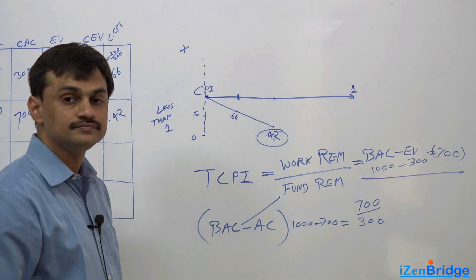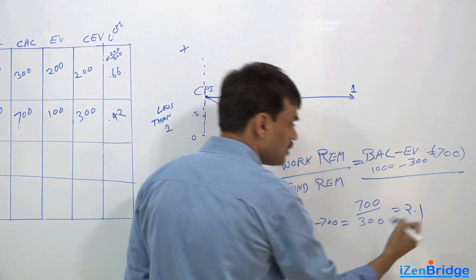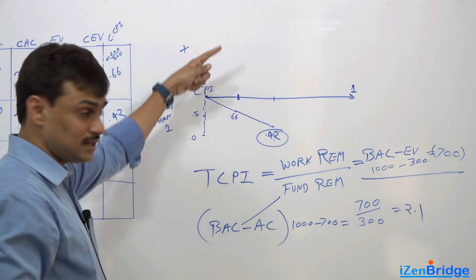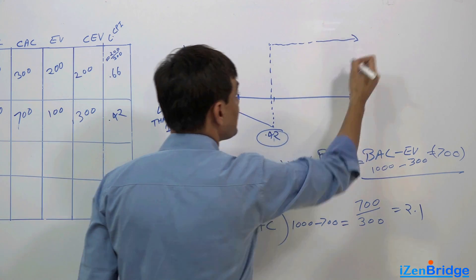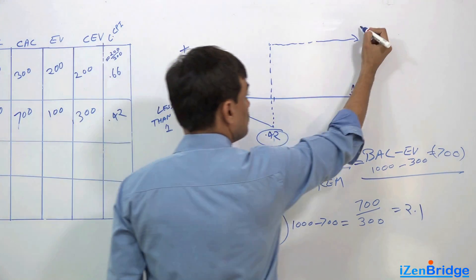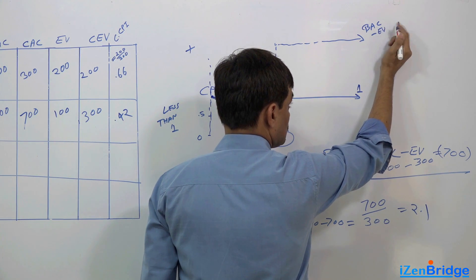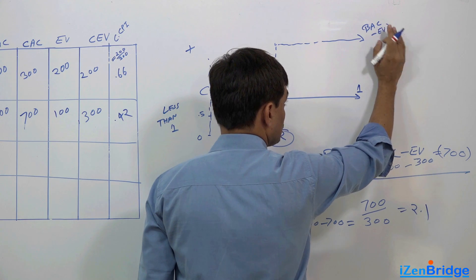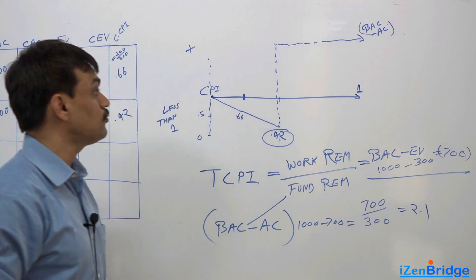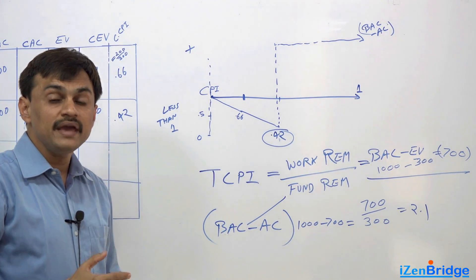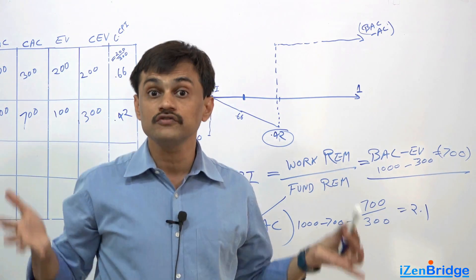And if I go with this calculation, it is $1000 minus $700, and I am reaching to a situation where I have $700 divided by $300 to take care of. So I need to achieve a cost performance index of 2.33. So if I want to get this work done, I need to take my performance somewhere here, and then only I can finish the work. I need to make $2 from each dollar spent because I'm only left with $300 and I need to finish the work of $700.